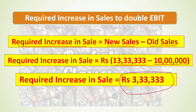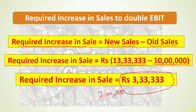So the required increase in sales to double the EBIT to 2 lakh rupees is 3.33 lakh rupees. Remember: variable costs vary according to the number of units produced, while fixed costs remain fixed. I hope the basic concepts are clear. Please share and subscribe to see the next video. Thank you so much, perform best in your exams. Bye-bye, take care, stay safe.